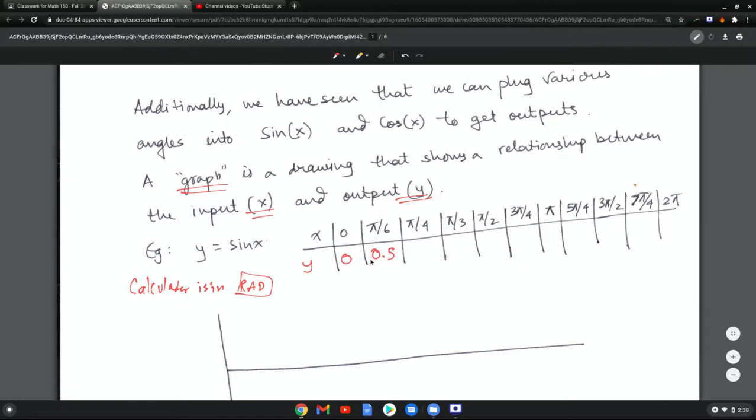Then I go sine of pi divided by 4, that's 0.707. Sine of pi divided by 3 is 0.866. Again, what you can do is you can pause the video and try to fill this up on your own and verify by looking at my answers to make sure that you are doing it correctly.